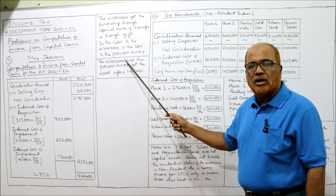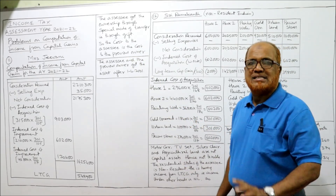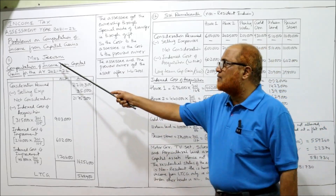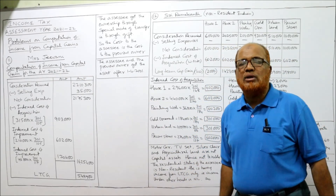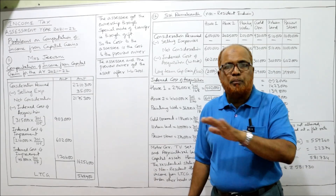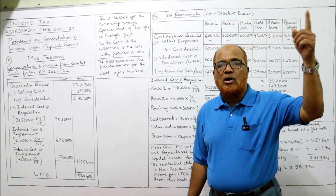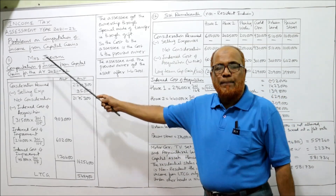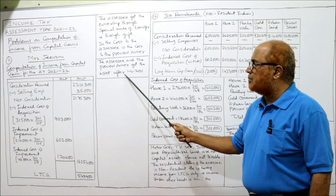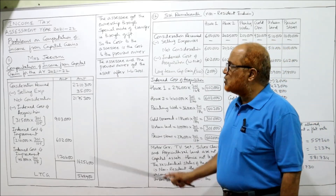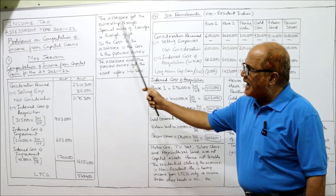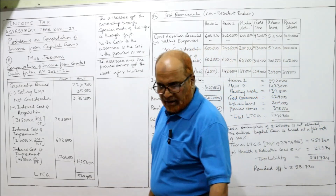In the working note, write that the assessee got ownership through special mode of transfer. Mrs. Jeevani got the property through gift, which is called special mode of transfer — I have explained this in the theory video. So the cost to the previous owner (Sri Kiran) is the cost to the present owner (Mrs. Jeevani). The previous owner acquired the asset after 1st April 2001. This is the end of problem number 11.